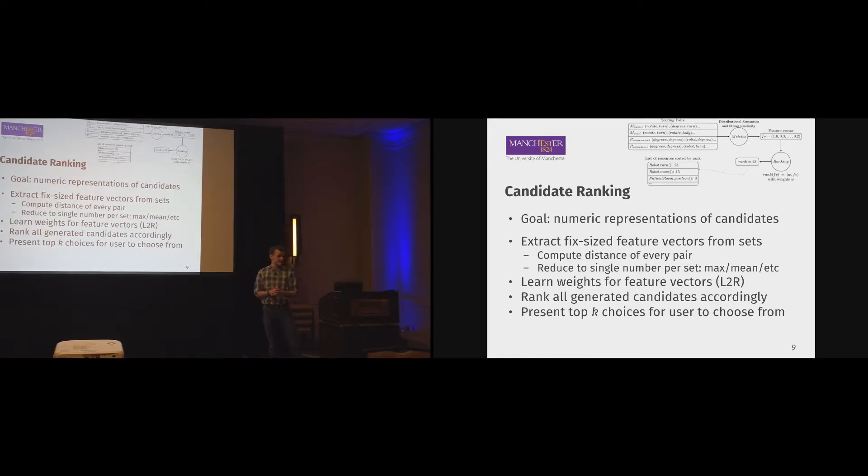For candidate ranking, the goal is to obtain a numerical representation of every candidate to rank the proposals which are more related higher in the list. To that end, we extract a fixed size feature vector for every statement by utilizing the sets generated above. We compute the distance for every pair which we generated in the previous step - it could be any distance, but we use edit distance for string distance and a word embedding distance using pre-trained word embeddings such as Word2Vec or GloVe. We reduce the number of pairs, which is variable, to a single number using any reduction operation such as max, mean, or sum.